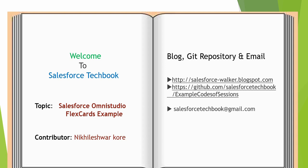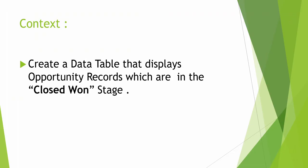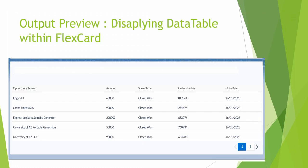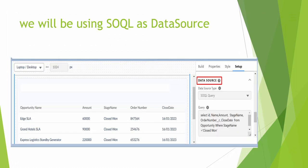Hello everyone, welcome to Salesforce TechBook. In this video we will be creating a flex card example. Within a flex card, we will be creating a data table that displays opportunity records which are in the Closed Won stage. Here is the output preview — we will be displaying the data table showcasing opportunity records whose stage name is Closed Won. For this data table we will be using an SQL query as a data source. Now let's create a flex card in our Salesforce org.